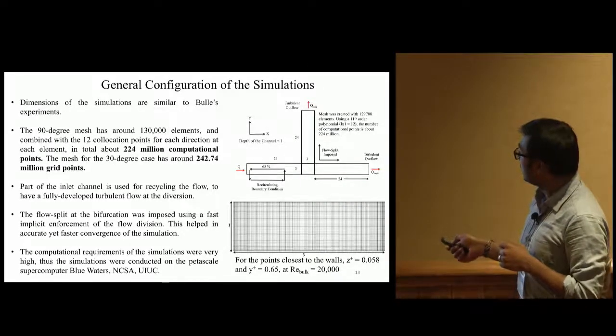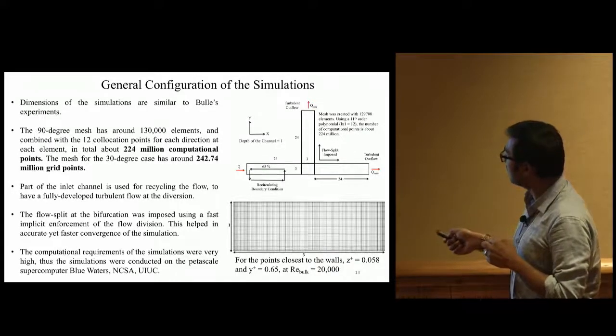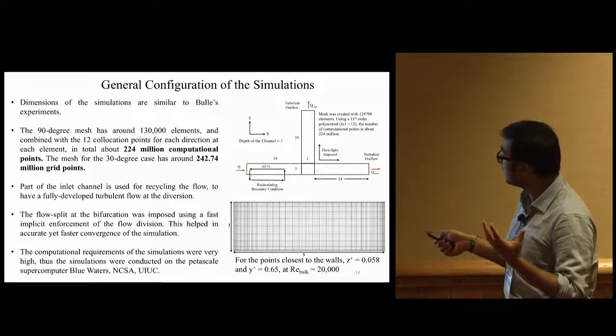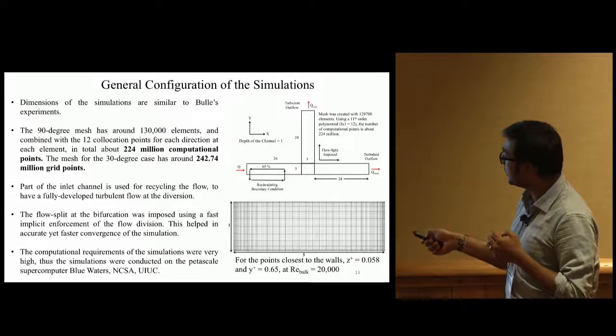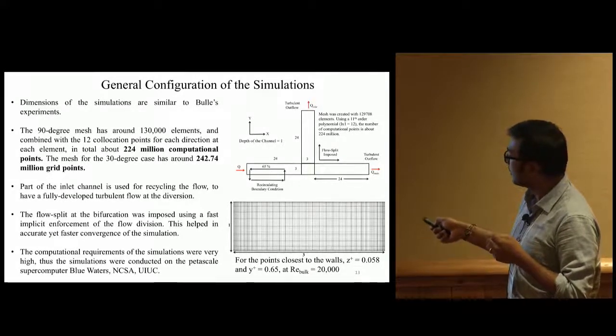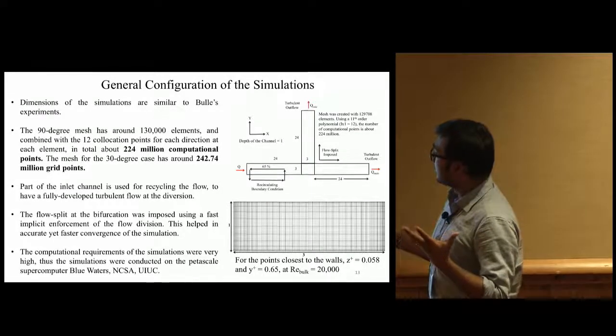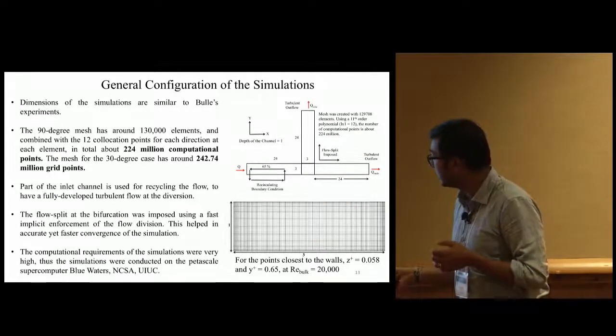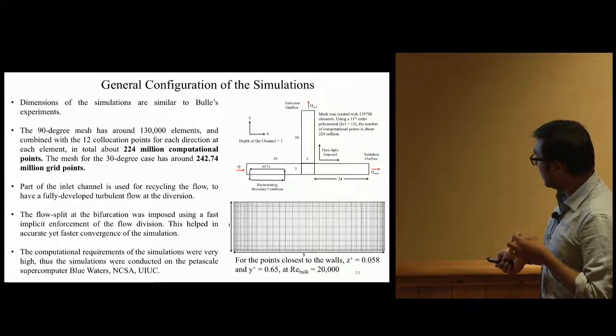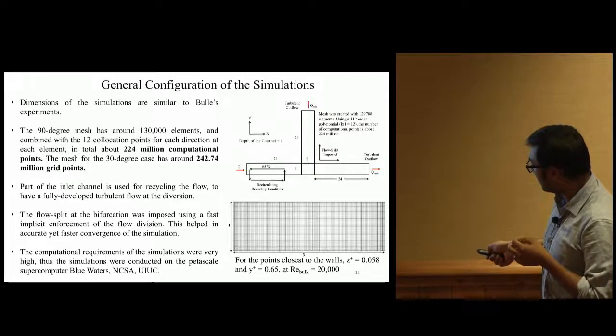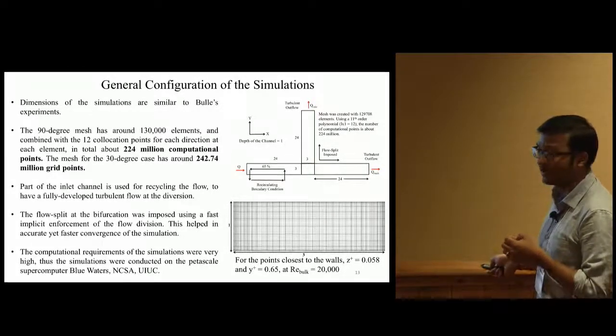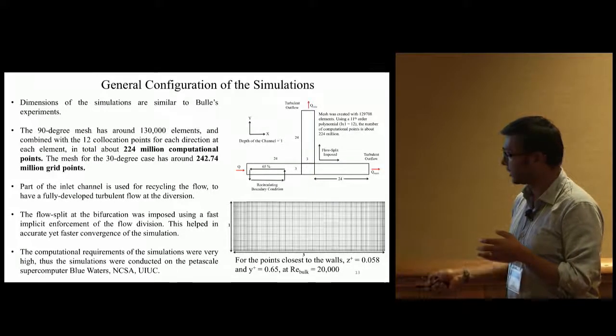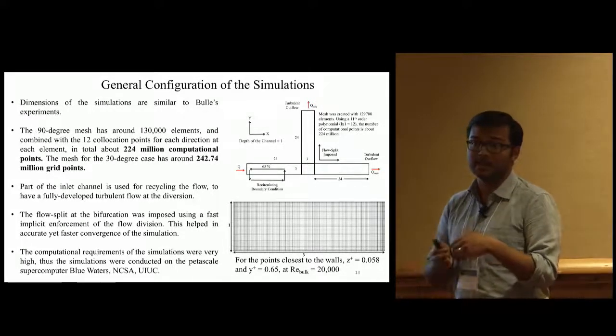For the layout, we have one inflow and two outflows. To ensure the boundary layer is fully formed at the flow region of interest, we use recycling boundary conditions for 65% of the inflow channel. Our simulations had 224 to 242 million computational points. For Reynolds 20,000, Z plus of the first point was 0.058 - resolution as good as DNS vertically - and 0.65 in transverse direction.